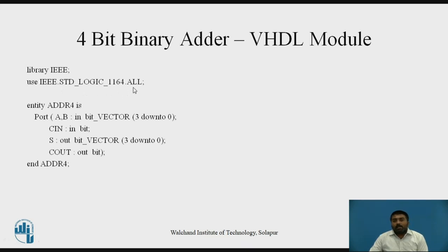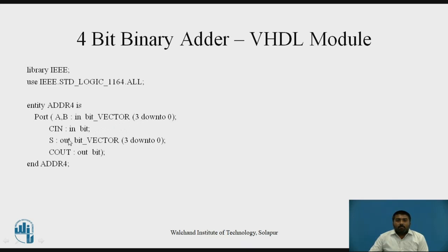Every VHDL code has three different sections. The first part is the library declaration part — we have to include the libraries. The second important part is the entity. In the entity, we define how many ports there are, what are the inputs and outputs, and what is the type of those inputs. A and B are inputs of bit vector type having 4 bits, so they have a range of 3 down to 0. Sum S is the output, also a 4-bit vector with range 3 down to 0. C out is the carry output, a single bit.